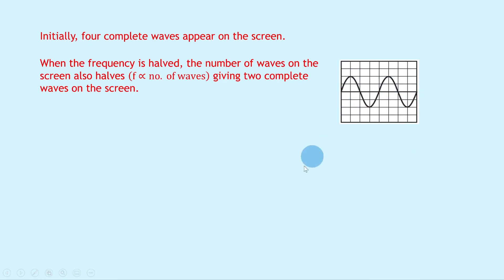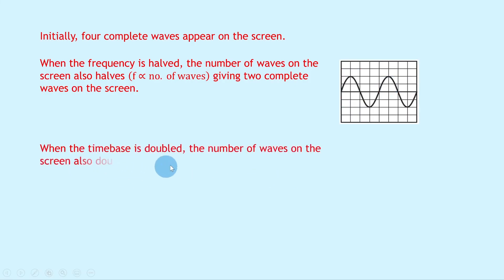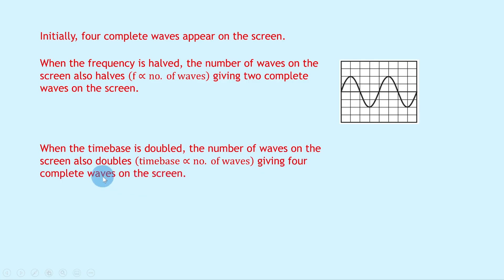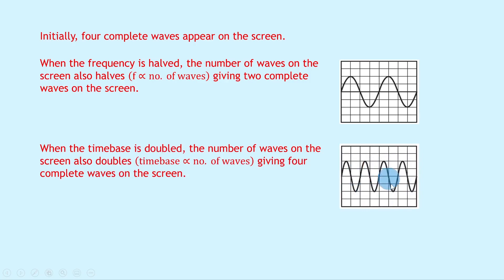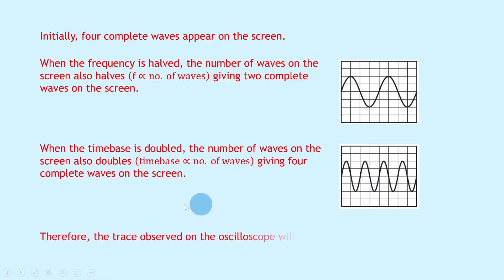When the time base is doubled, the number of waves on the screen also doubles, because the time base is proportional to the number of waves on the screen. Doubling the time base doubles the number of waves back to four complete waves — which is what we started with. Therefore, the trace observed on the oscilloscope will be the same as the original.